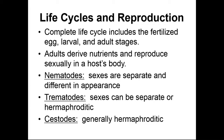The life cycle of a helminth is fairly complicated. The complete cycle involves going from a fertilized egg to a larval stage to an adult stage, and depending on the species, there can be multiple hosts involved. The adult helminths derive their nutrients and reproduce sexually in the host body. Nematodes are going to have separate sexes with different appearances. Trematodes can alternate between sexual reproduction with separate sexes, or if only one gender is available, a trematode can switch genders. Cestodes generally switch genders as needed for sexual reproduction.